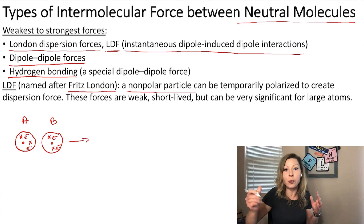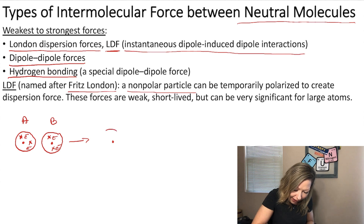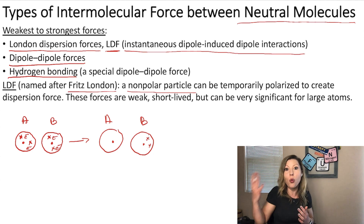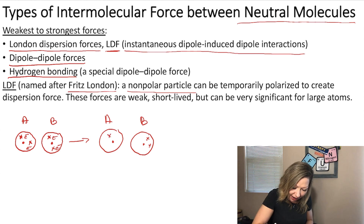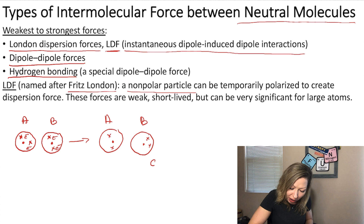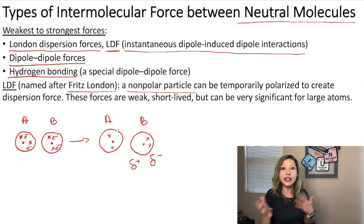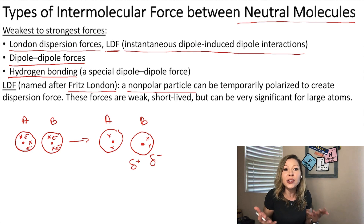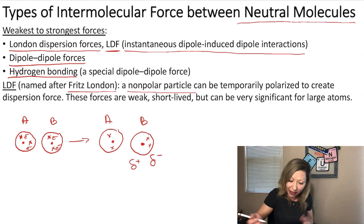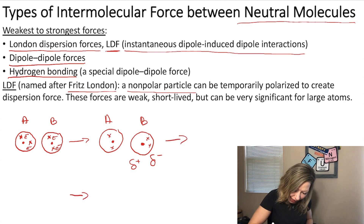As time goes by, the electrons are moving around. At some point, both of the electrons in atom B end up on one side of the atom, while the electrons in A are still spread around. At this point, a partial negative charge is created on one side of atom B and a partial positive charge on the other side. So what happens to atom A at this point? Atom A senses that some kind of charge has appeared around it, so it gets polarized and arranges its electrons to create an electrostatic attraction.